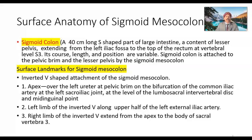The sigmoid mesocolon connects the sigmoid colon to the pelvic wall. The sigmoid colon is a 40 cm long S-shaped part of the large intestine, a content of the lesser pelvis, mostly extending from the left iliac fossa to the top of the rectum at the vertebral level S3.